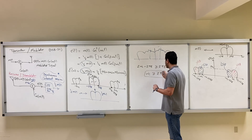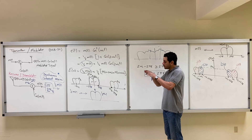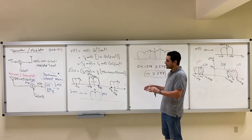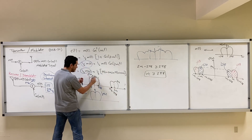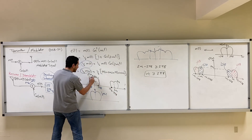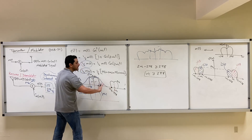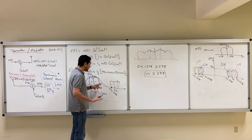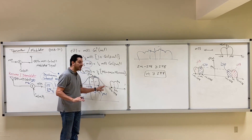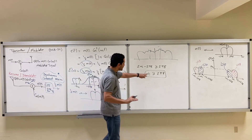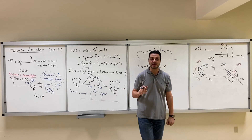The condition ωc ≥ 2B is theoretical, assuming a sharp ideal low-pass filter. In practice, low-pass filters do not have a sharp cutoff — they roll off gradually. So in practice we need ωc to be even larger than 2B to ensure the shifted images do not overlap with the desired signal band through the filter's transition region.